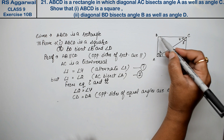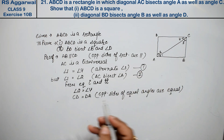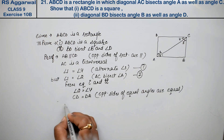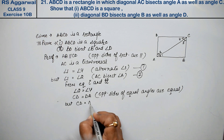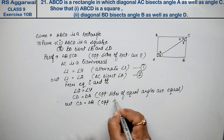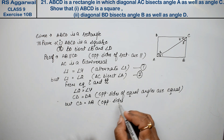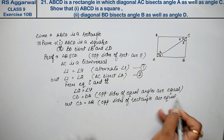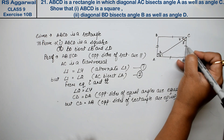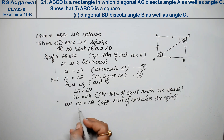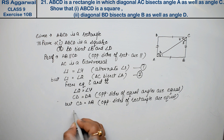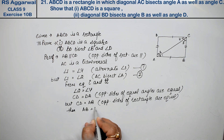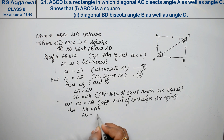अब जब CD equal होगया AD के, rectangle के according CD तो equal था AB के. But CD equals to AB, because opposite sides of rectangle are equal. Rectangle में यह इसकी equal है, यह इसकी equal है — that means यह इसकी equal हो गया. जब यह दोनों equal थे, तो AB is equal to DA.